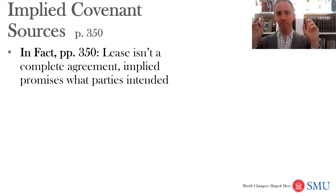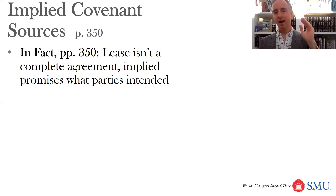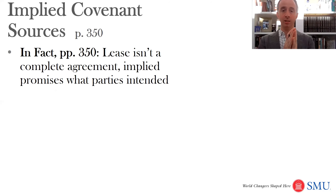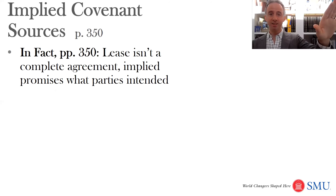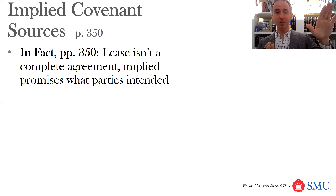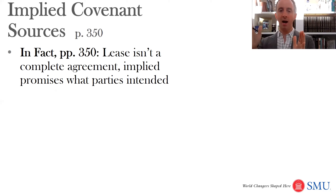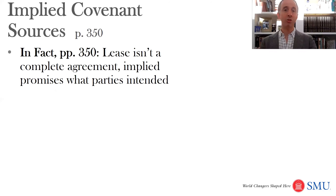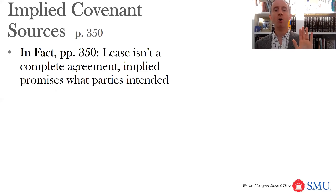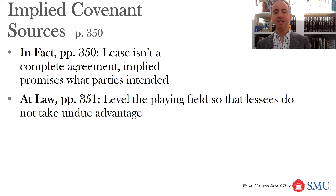If this theory is correct — that the parties simply didn't have time to write it all down — that would imply that if somebody wanted to write down the opposite, saying you don't have any duty to test, for example, that would abrogate that implied covenant. And in fact, that is what we've seen, at least with the implied covenant to test. Courts used to say that even with a ten-year primary term, you had a duty to start finding oil and gas in the first year; if you didn't, you'd lose the lease. In response, companies started using paid-up leases — paying all delay rentals up front with no further drilling duty — and courts have allowed that.